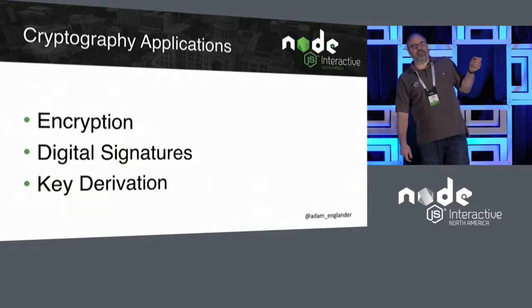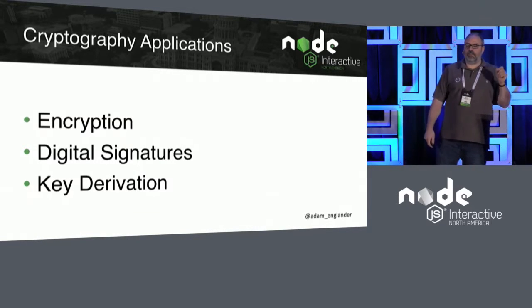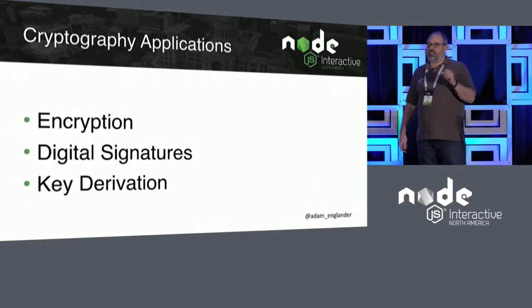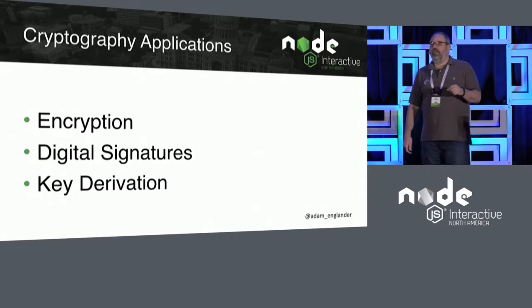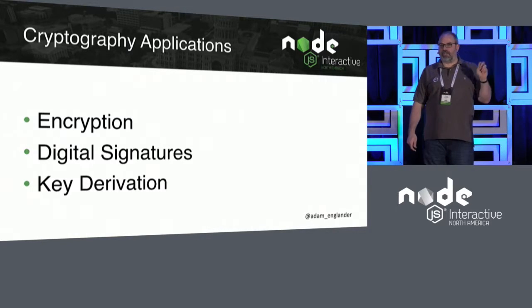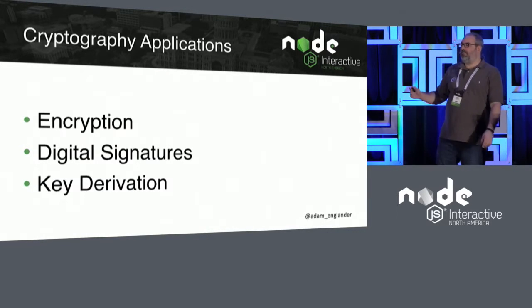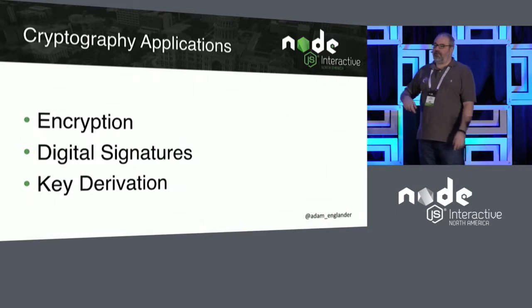The applications of cryptography we'll talk about are encryption, digital signatures, and key derivation. And when you see key derivation, think password hashing — it's not actually password hashing, and if you're just hashing, you're doing something wrong, and we'll talk about that.